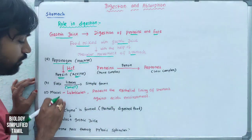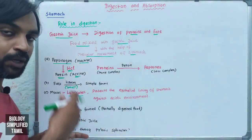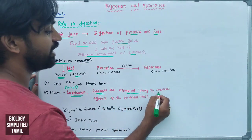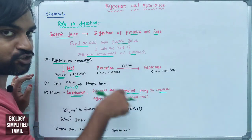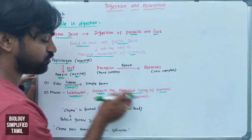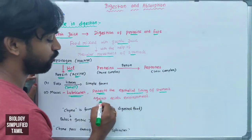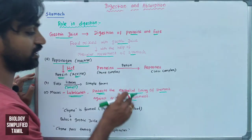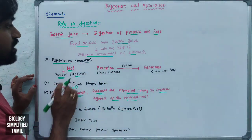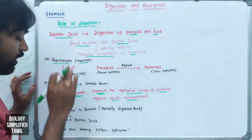Mucus is secreted and it lubricates the food. It protects the epithelial lining of the stomach. The epithelial lining of the stomach is protected by mucus from the acidic environment, because hydrochloric acid is present in gastric juice.